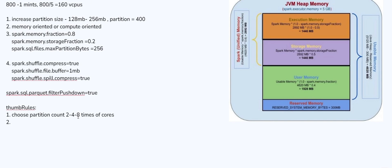The next thumb rule is to keep one core for four to six GB of executor memory. So if you are giving 20 GB to an executor, you can go up to a maximum of five cores. That is the medium case. If it is memory-oriented, you can go with eight to ten GB per core. If it is compute-oriented, four to six GB of memory per core is better. Keep these thumb rules in mind when you try to increase your configurations.